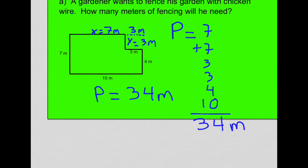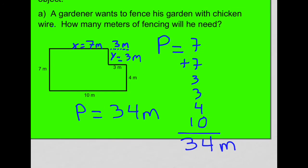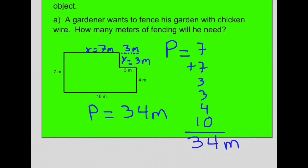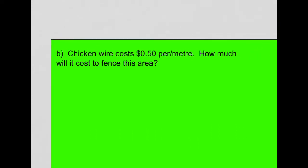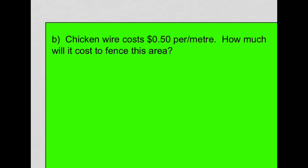Now, that's how we calculate perimeter, add up the distance around. Now the second part of this problem. Now that we know the distance around. Chicken wire costs 50 cents per meter. How much will it cost to fence this area?